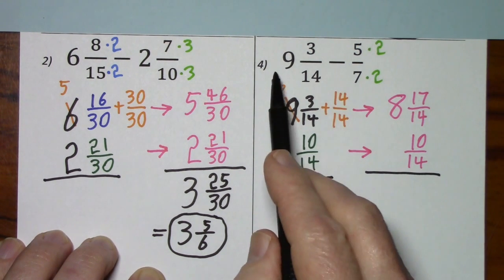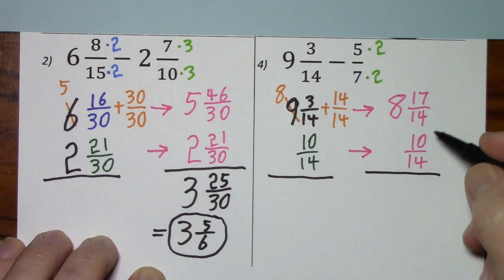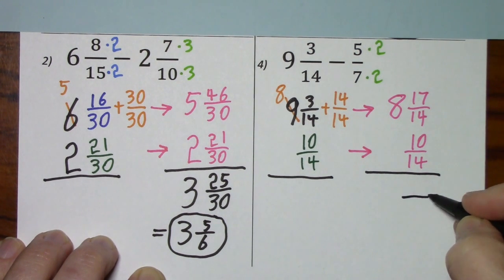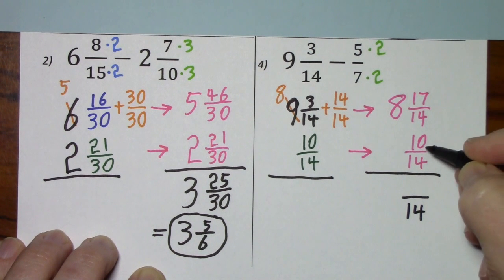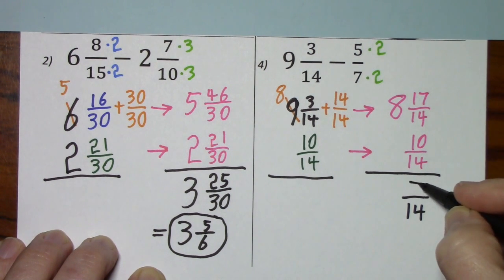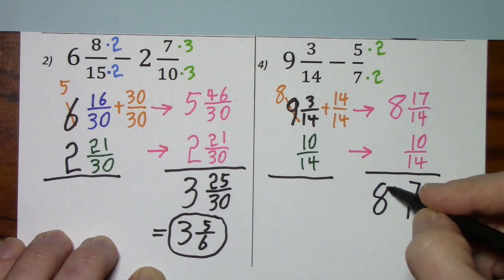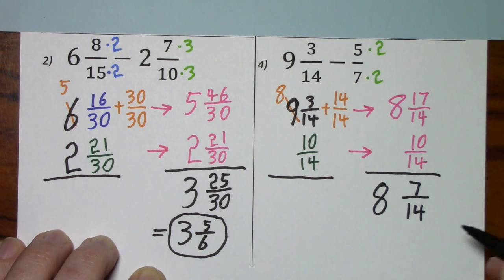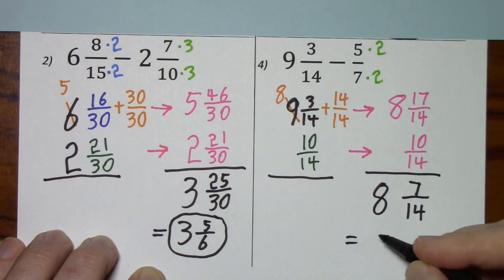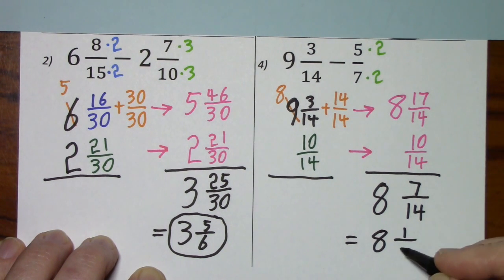And again, the signs are different. We are subtracting. Certainly keeping the 14. 17 subtract 10 is 7. And the 8 comes down. But we can't leave it in this form. This is equal to 8. Divide by 7. Divide by 7. So, 8 and 1 half.